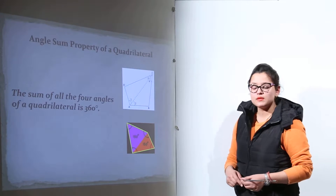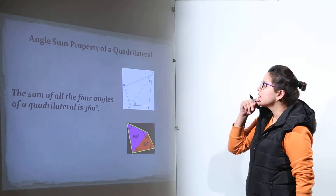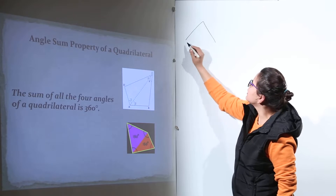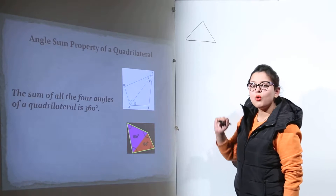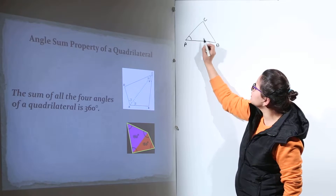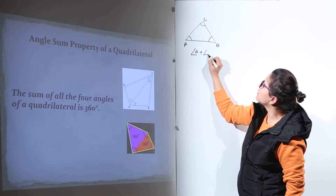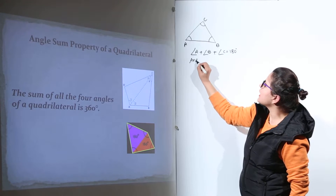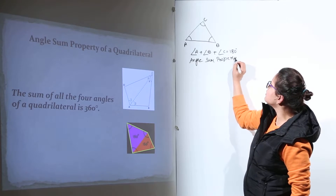The next topic is the angle sum property. Before moving on, I would like you to revise the angle sum property of triangles that we have learnt in our previous classes. We have a three-sided polygon, that is a triangle. We all have learnt that the sum of all three angles of a triangle is 180 degrees. This was known as the angle sum property of triangles.